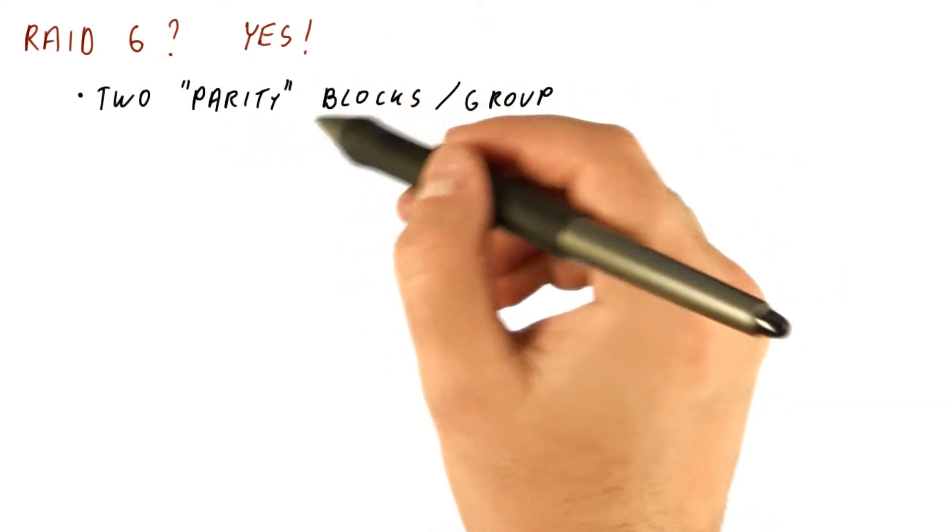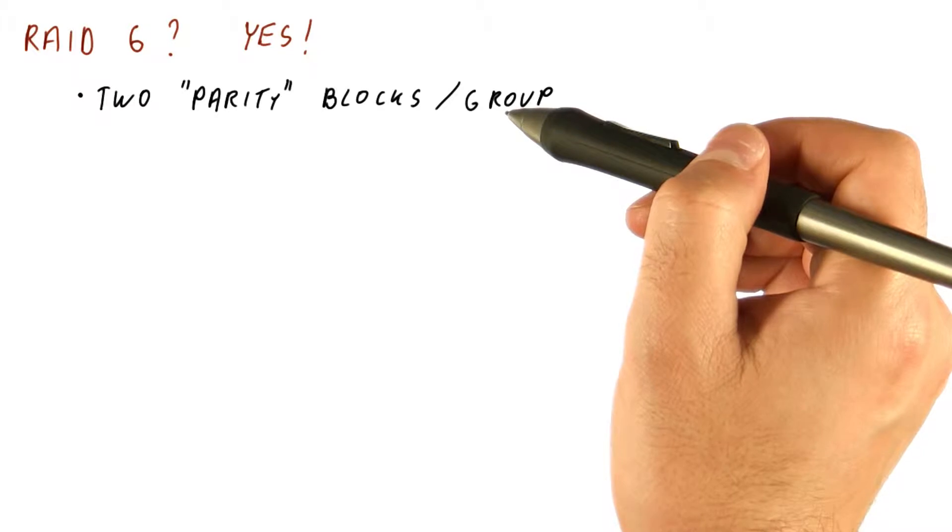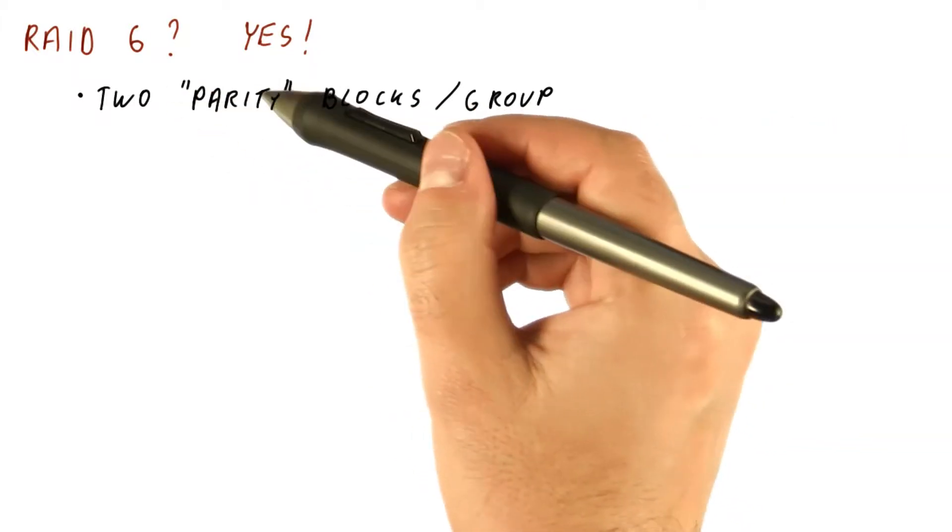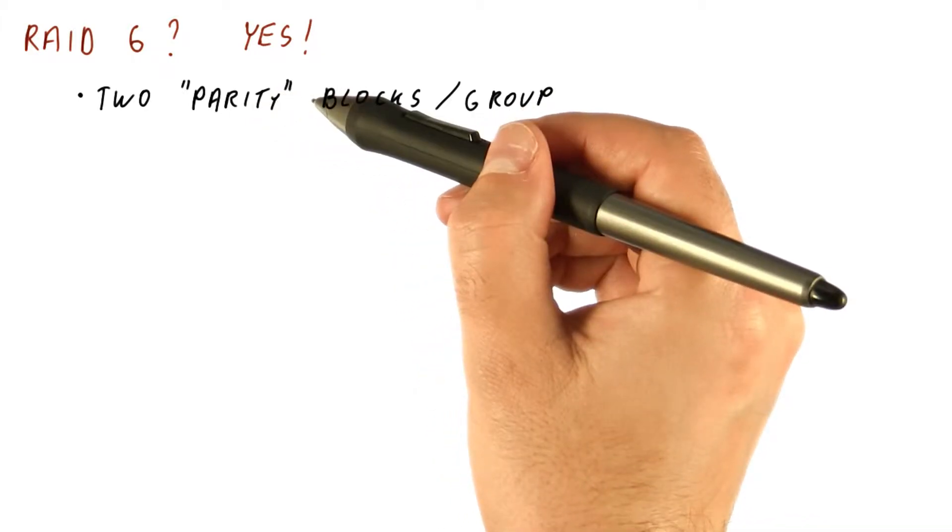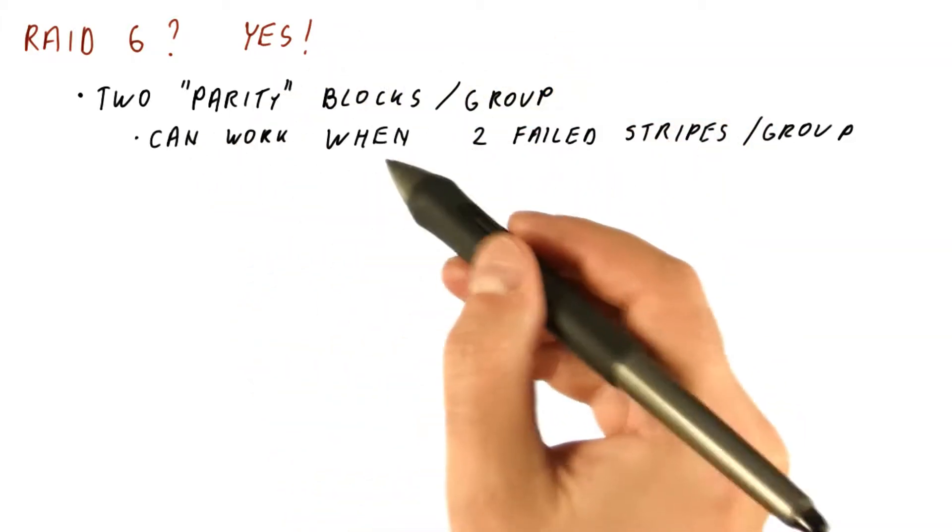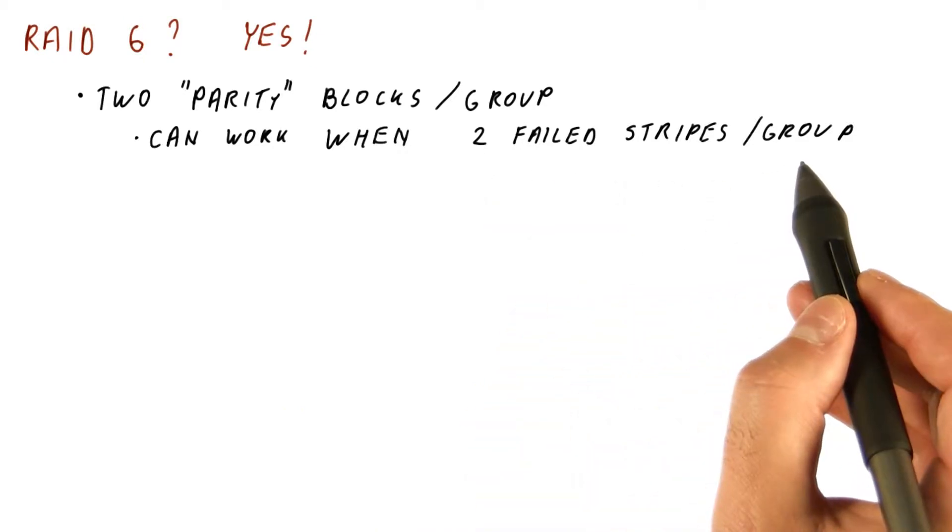It's similar to RAID 5, except that each group of blocks, instead of getting one parity block, gets two. Let's call them parity quoted blocks. They have different types of parity. And as a result, RAID 6 can work when there are two failed stripes per group.